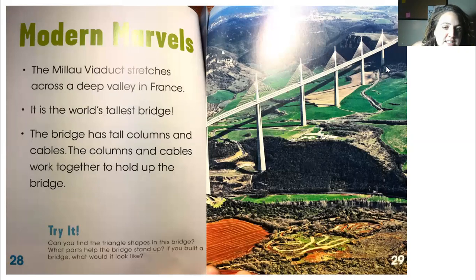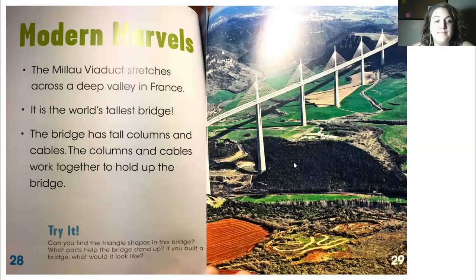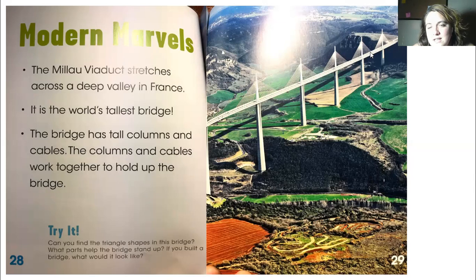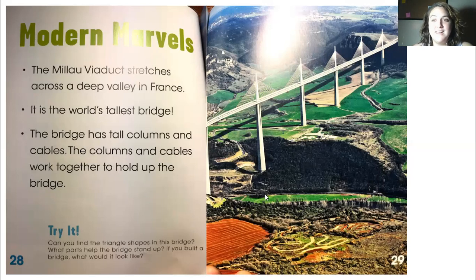This bridge has a lot of triangle shapes — can you find the triangles? Let's count them: one, two, three, four, five, six. We can also see half triangles on each side. How many did you count? That's right, there are eleven.